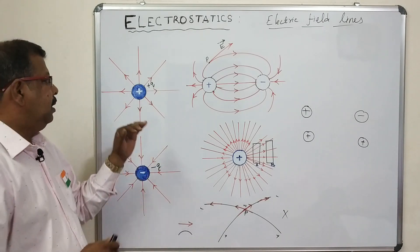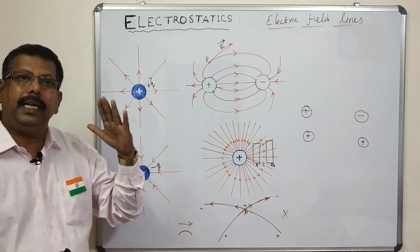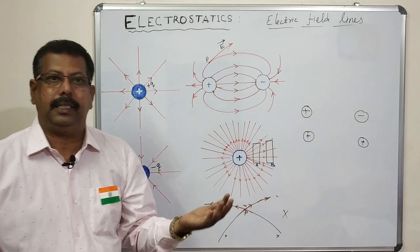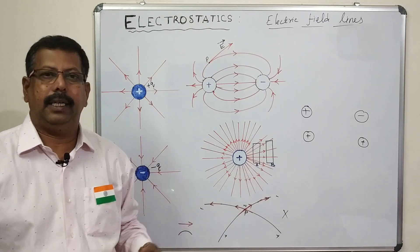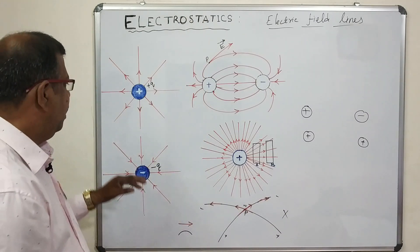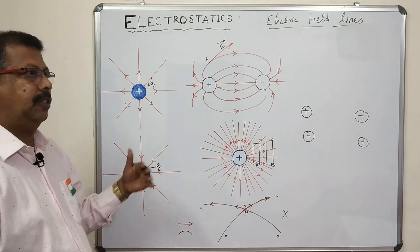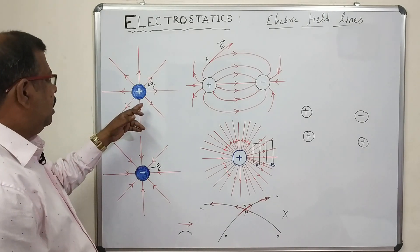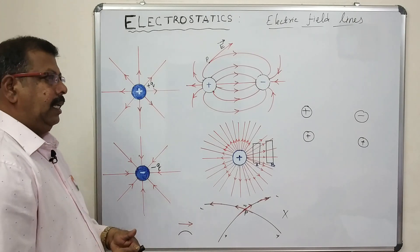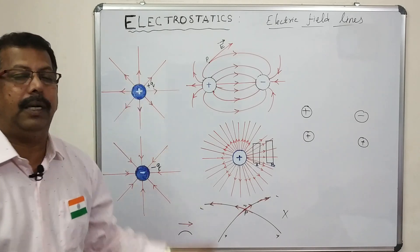Or the electric field line starts from positive charges and ends at infinity if there are no negative charges. For an isolated positive charge, the field lines should be drawn radially outwards.